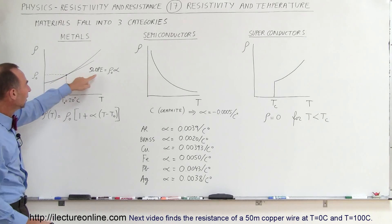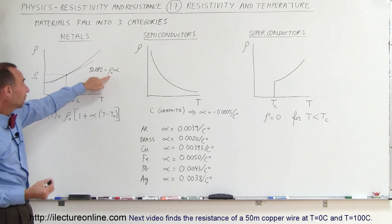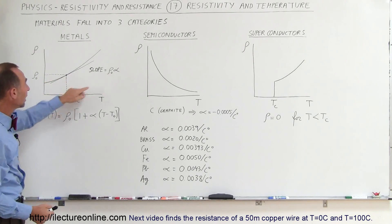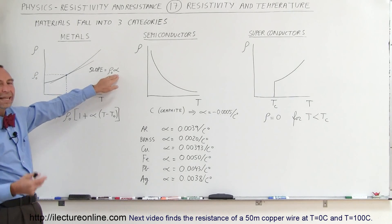We know that the slope of that line is equal to the resistivity at 20 degrees centigrade times what we call a temperature coefficient.